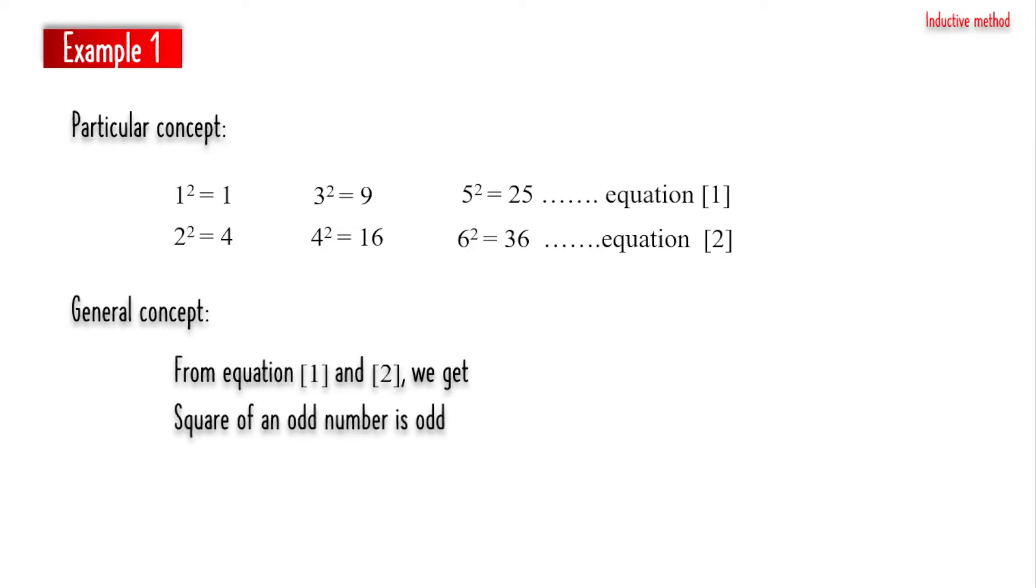Example 1. Here you can start with some simple concept like 1 square equal to 1, 3 square equal to 9, 5 square equal to 25. This is equation 1. 2 square equal to 4, 4 square equal to 16, 6 square equal to 36, equation 2. So from 1 and 2, we can say that square of an odd number is odd, square of an even number is even. So in this way, we can prove some properties of odd and even numbers.